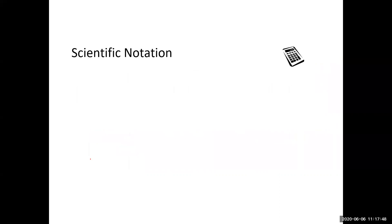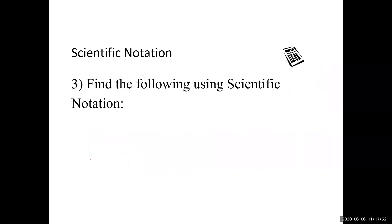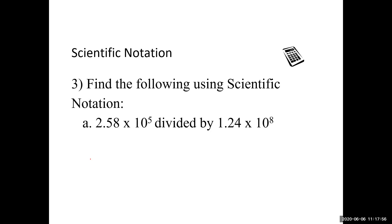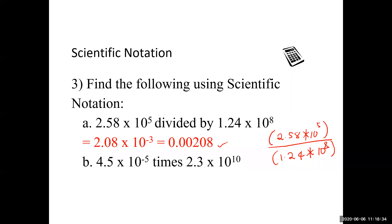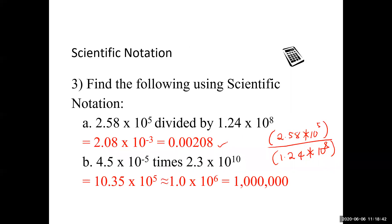To find results using standard notation with your calculator: put the numbers in two sets of parentheses and divide. For example, 2.58 divided by (1.24 × 10^8) — enter each part in parentheses, otherwise your result may be wrong. For multiplication, same approach: use parentheses for each factor and multiply. That is how you use your calculator for these operations.